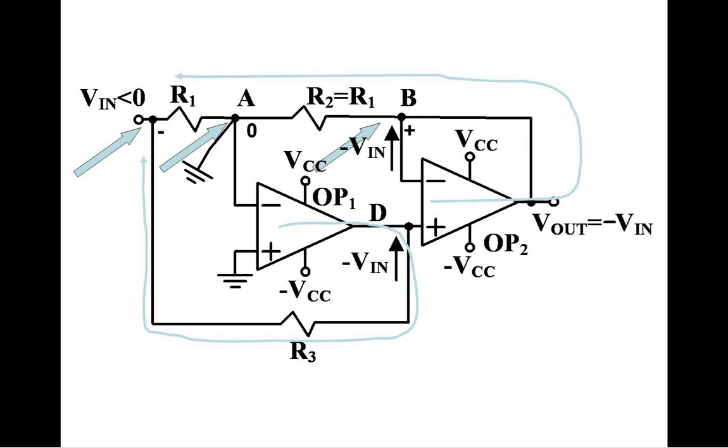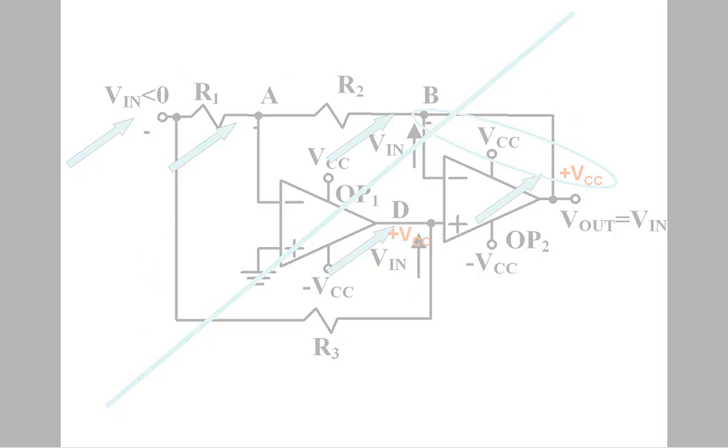If R1 is equal to R2, output is minus input voltage. However, if R1 and R2 are different, output is positive but with different amplitude comparing to negative input signals. This is how we can easily obtain batman-like waveforms.